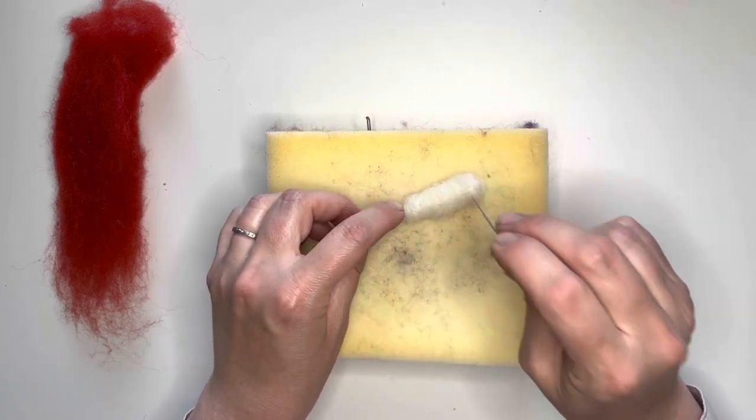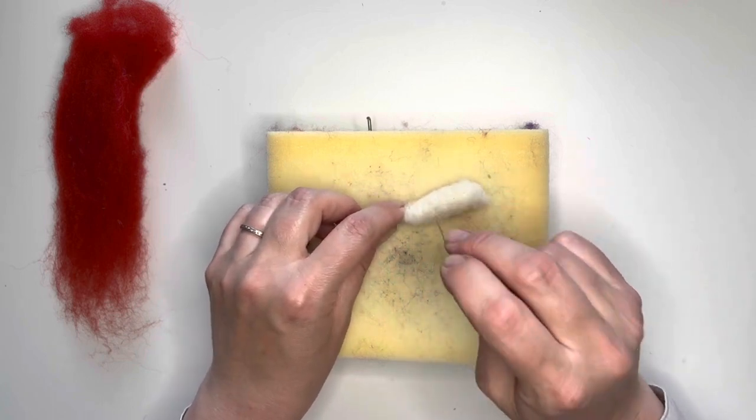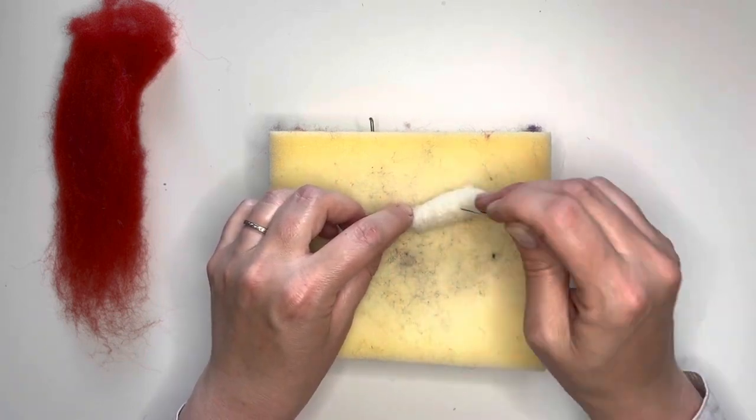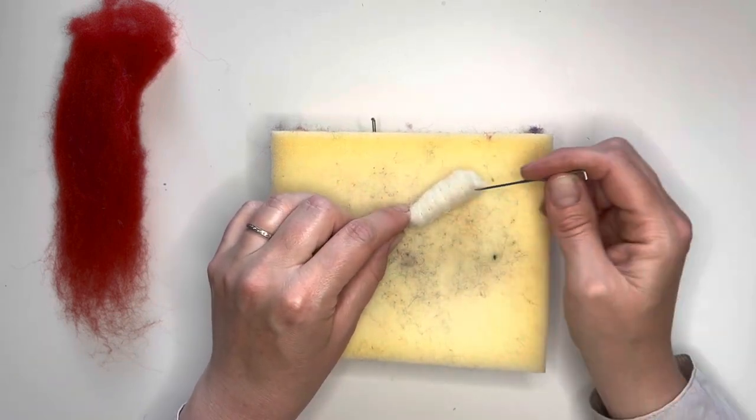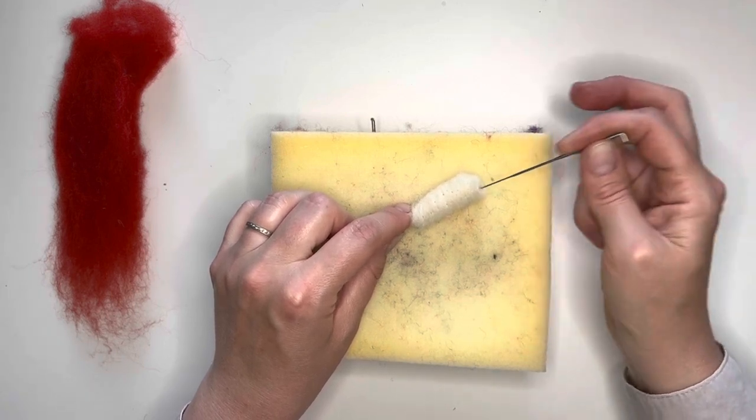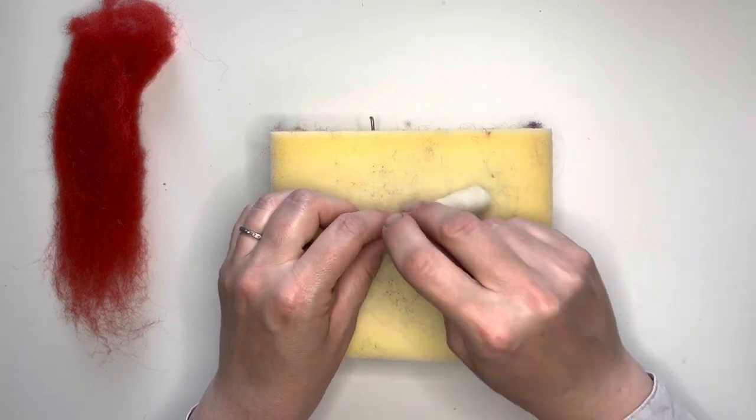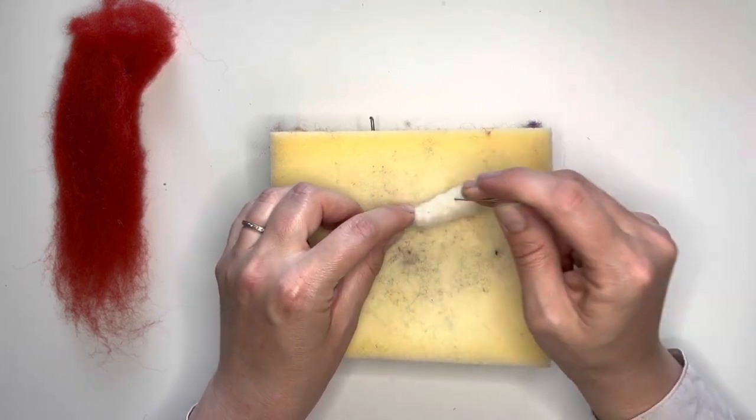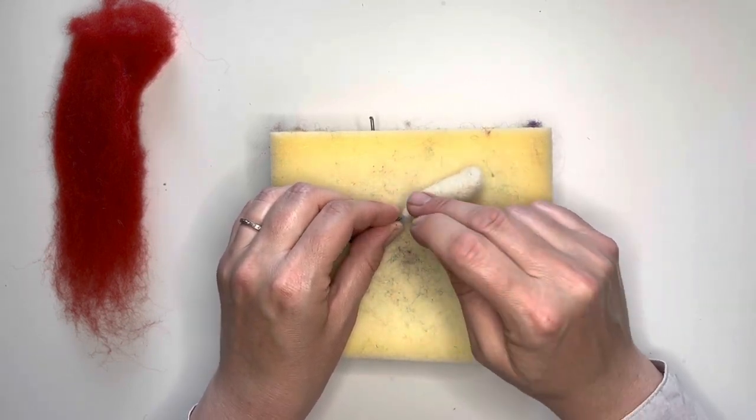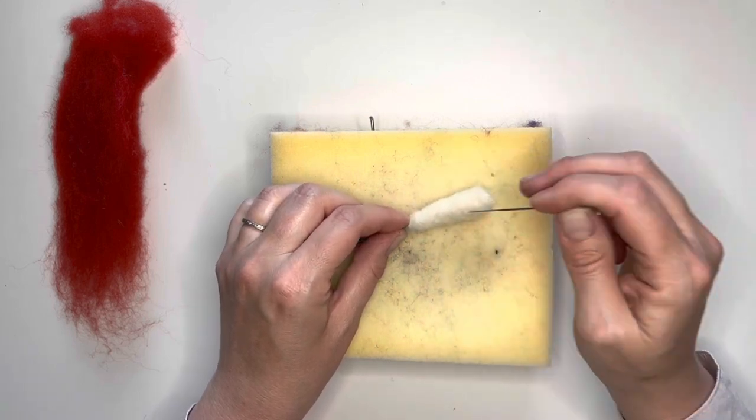So let's go ahead and poke it and turn it, poke it and turn it, and as you're poking, those little notches in the needle are tangling the fibers together and making it turn into felt. So keep on poking, get out all your frustrations and all of your week stress.